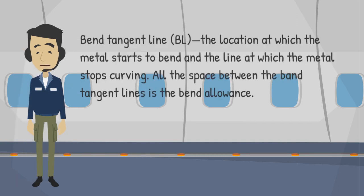Bend tangent line (BL): the location at which the metal starts to bend and the line at which the metal stops curving. All the space between the bend tangent lines is the bend allowance.